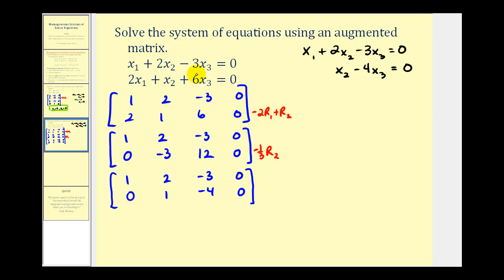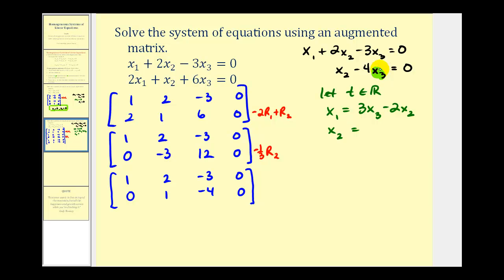Again, because we have three variables and two equations, we have one free variable, which we'll assign a parameter to. Let's let t equal some real number. Looking at our equations, it'll be easiest if we let x sub three equal t. Because we're letting x sub three be t, let's solve the first equation for x sub one and the second equation for x sub two. So x sub one equals three x sub three minus two x sub two, and x sub two is equal to four times x sub three.